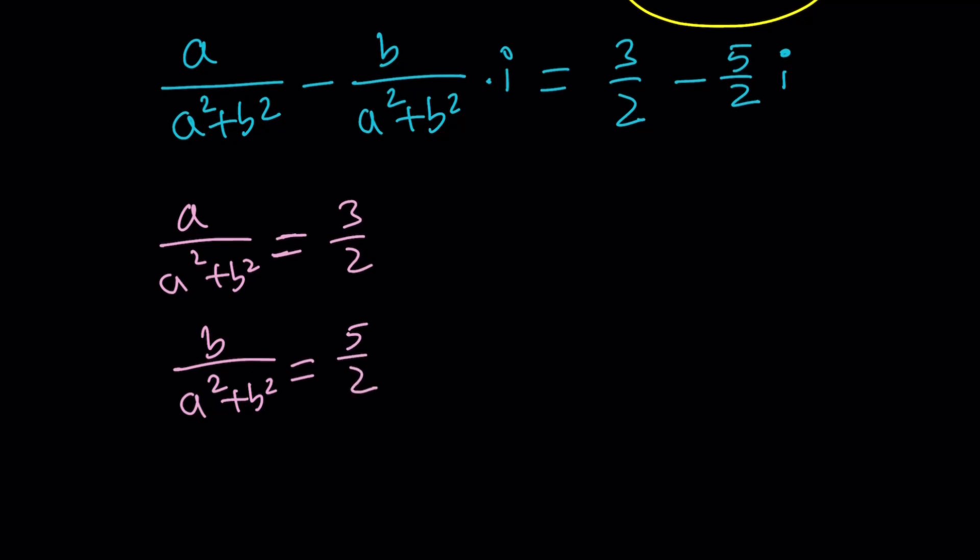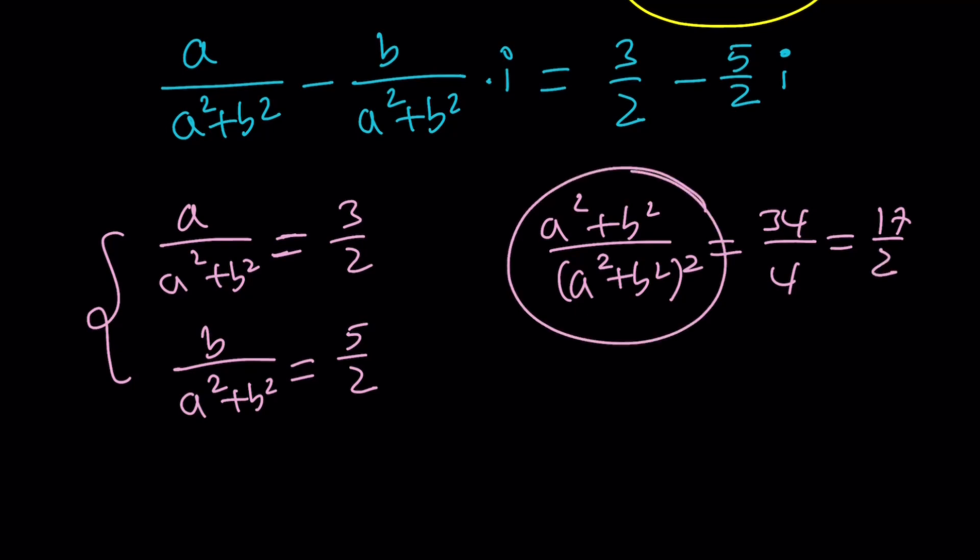Now how do you solve this system? One way to do it, which is not the best way, is you can square each equation and add them up. That's going to give you A squared plus B squared divided by A squared plus B squared squared, and that's going to give you 9 plus 25 which is 34 over 4, which is 17 halves. And then this is equivalent to A squared plus B squared and then you can plug it in. One way to do it, it's not super bad.